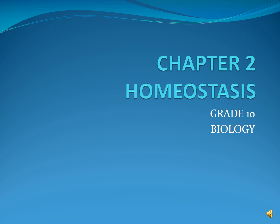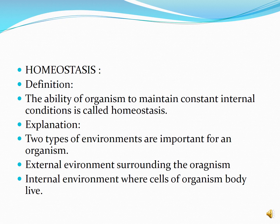Grade 10 biology, chapter number two: homeostasis. Homeostasis is the ability of an organism to maintain constant — meaning balanced — internal conditions. We define homeostasis as: the ability of an organism to maintain constant internal conditions, or any self-regulating process by which a biological system maintains its stability.